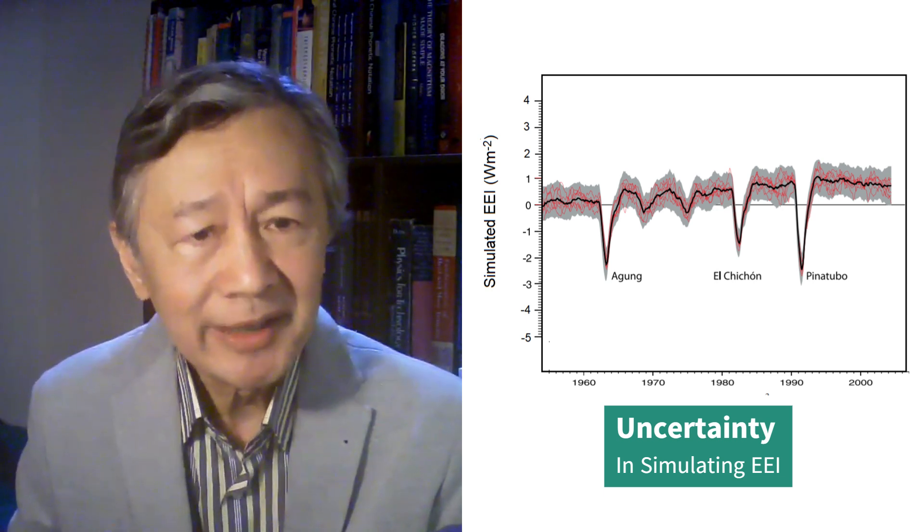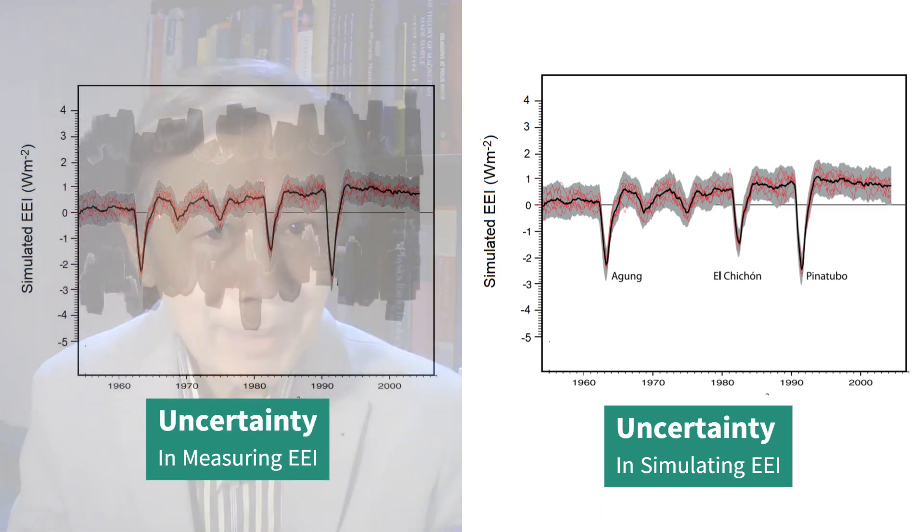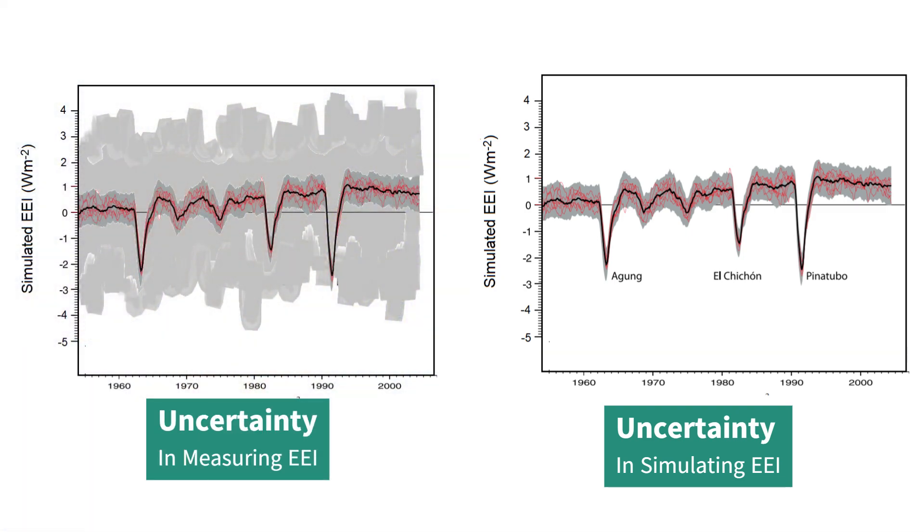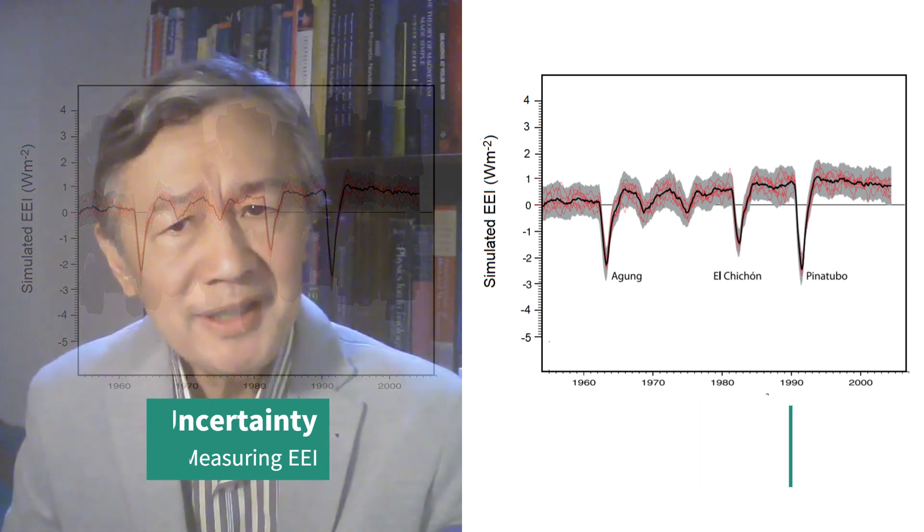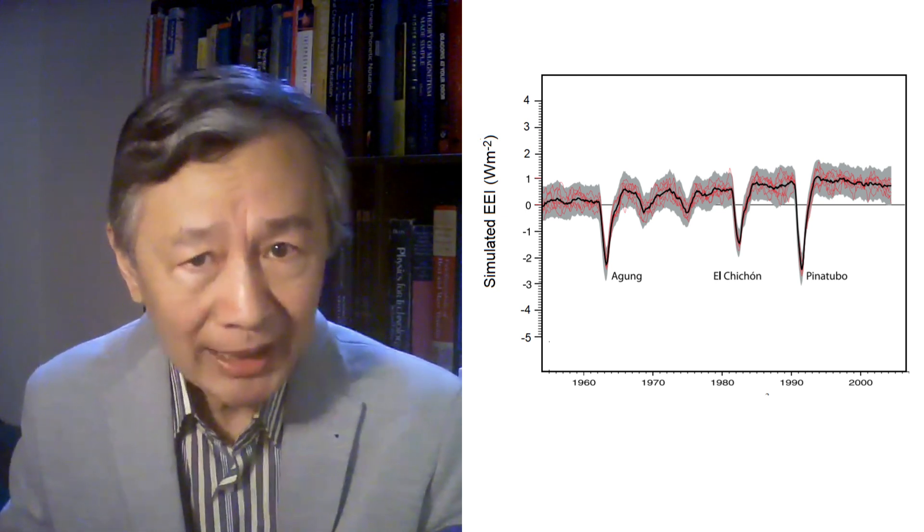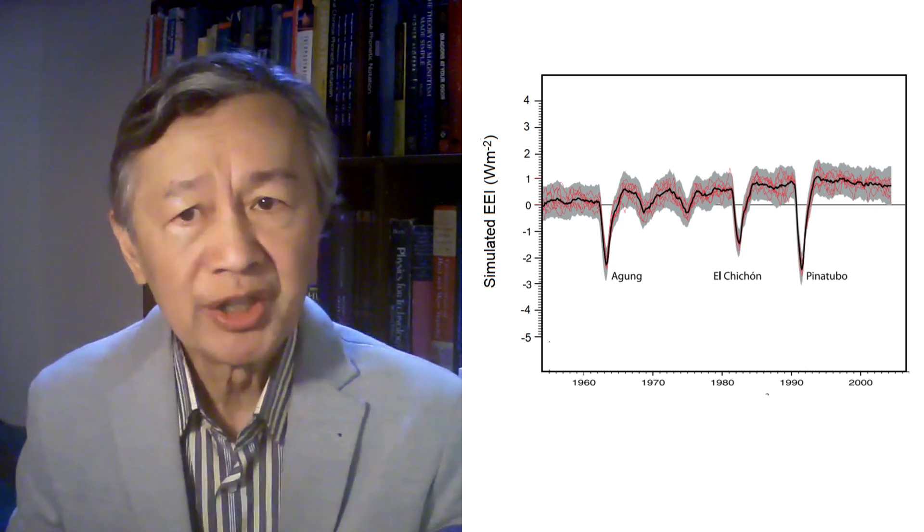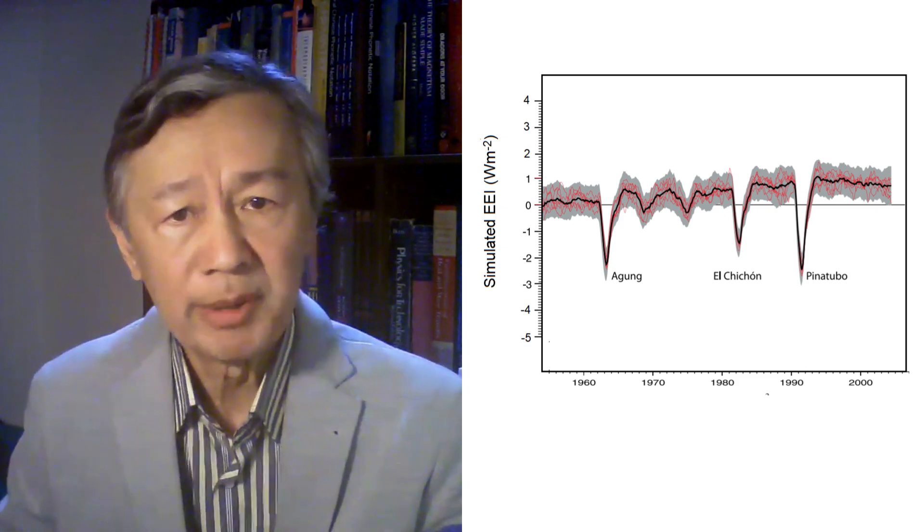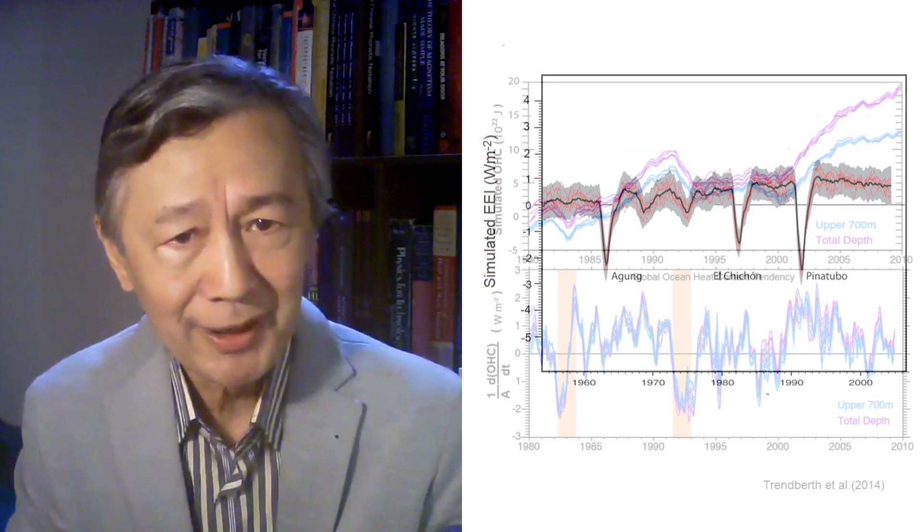No, it's not. The natural variability is much higher, plus minus 4 watt per meter square, as acknowledged by Graeme Stevens. You can see the mean EEI was almost zero before 1960 and gradually increased to almost positive 0.9 watt per meter square. Remember this number, please.